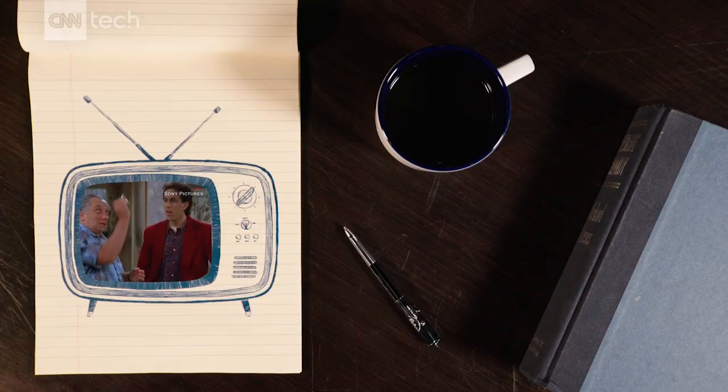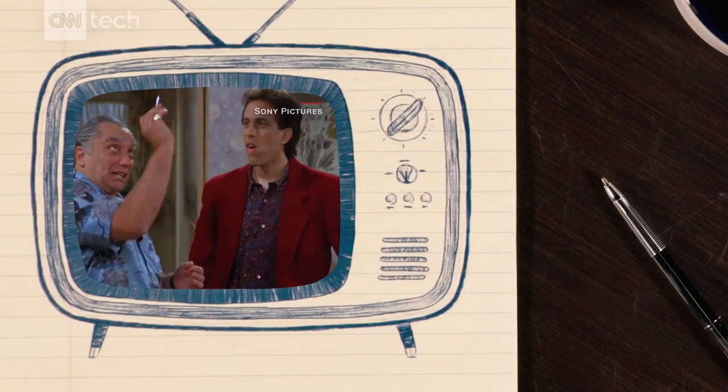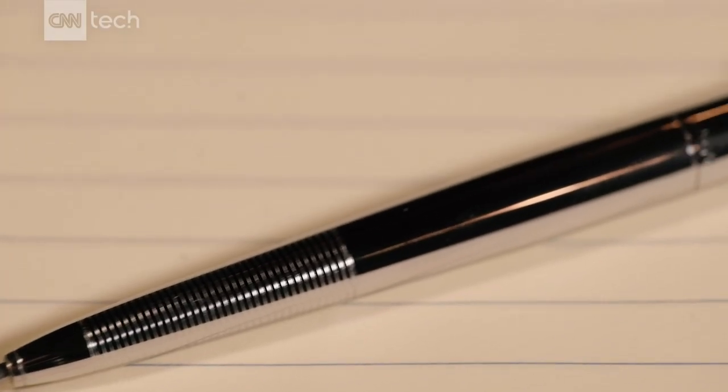An astronaut pen that writes upside down. That's a Fisher space pen. You might have seen it on Seinfeld, of all places. They're not like other pens.